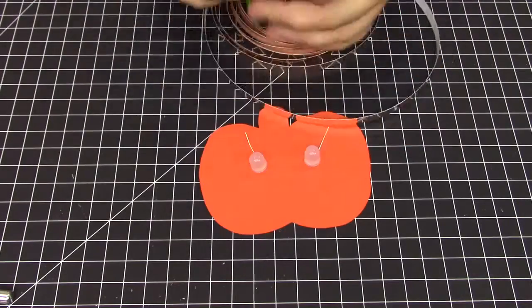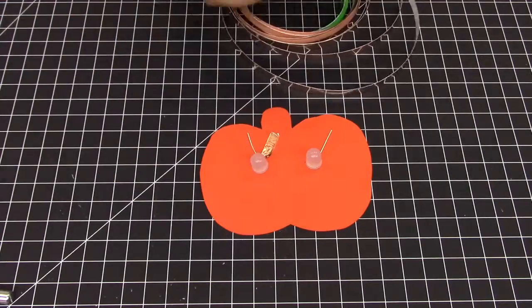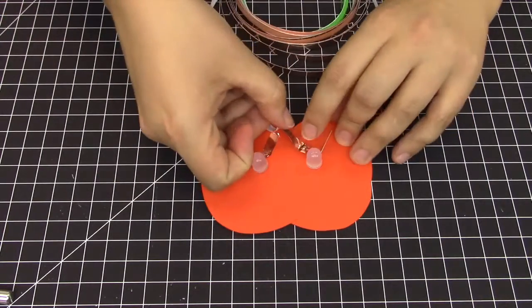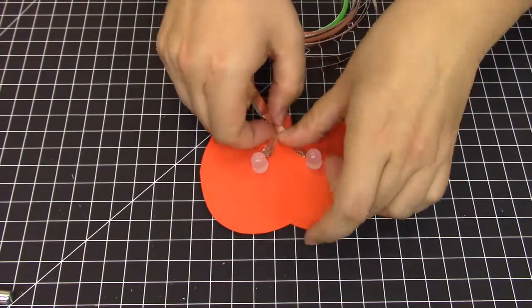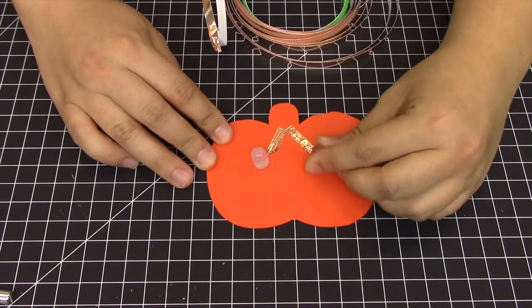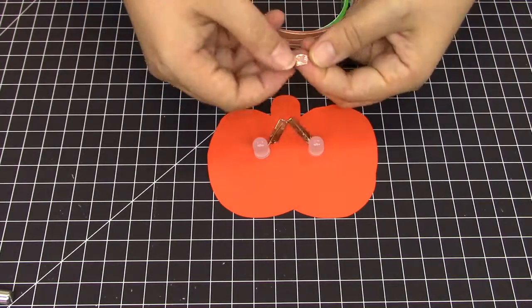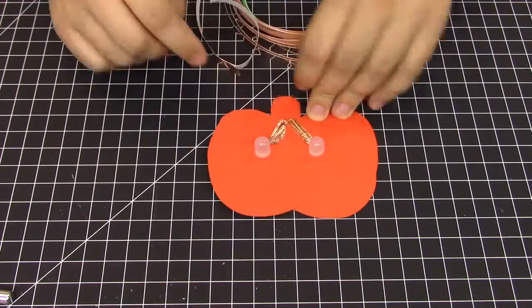Next, find your conductive copper tape and place one strip diagonally towards the stem, underneath each of the LED legs on the front. Rotate your legs so they are on top of the copper tape. Then take a small strip of copper tape and cover the LED legs, making a nice copper sandwich.